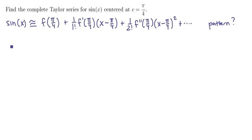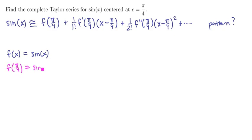Let's start off by taking derivatives, plug in π/4, and see if we can find numbers. Our function is sine of x, so at π/4 we're going to have f of π/4 is the sine of π/4, and that's √2 over 2. We'll stick this first number in the Taylor series as the first coefficient.